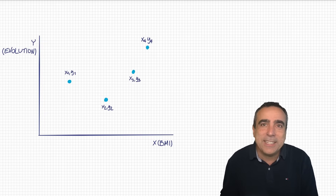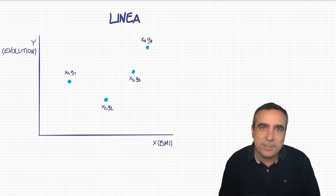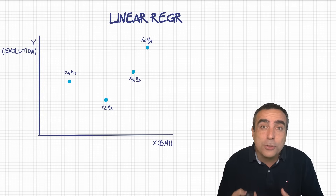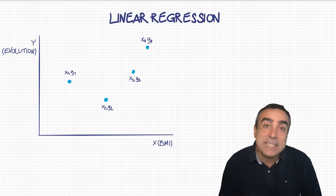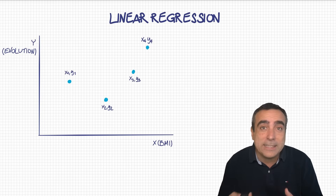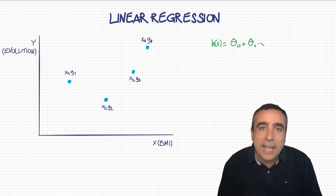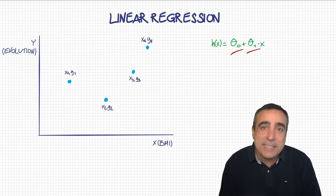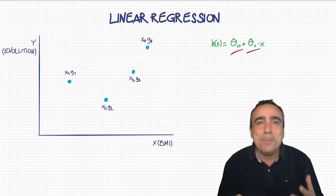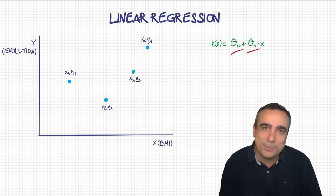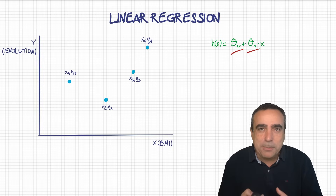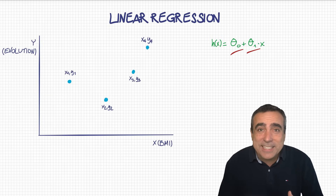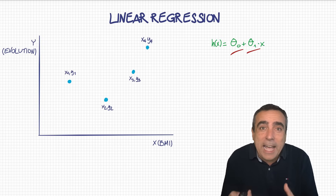The easiest way of doing this is called linear regression — it's super simple. We assume the relationship between the two is linear, so the function would look like this. Hopefully you remember the equation of a line: h of x equals theta 0 plus theta 1 times x. Theta 0 and theta 1 are called the parameters of the model. In future episodes, we'll see models with billions of parameters. The key concept in machine learning is finding the right values for these parameters to represent the samples as well as possible.